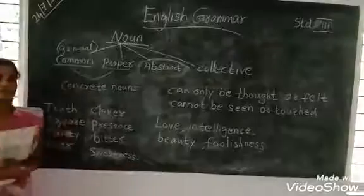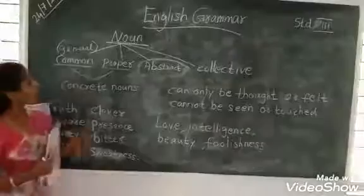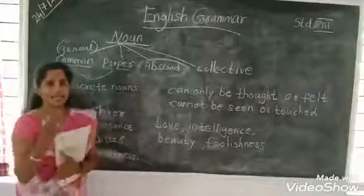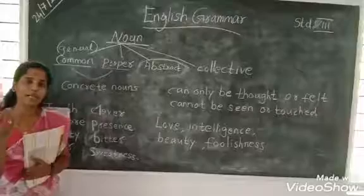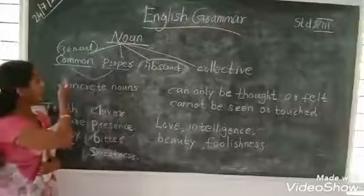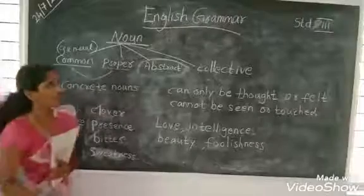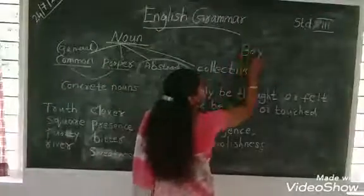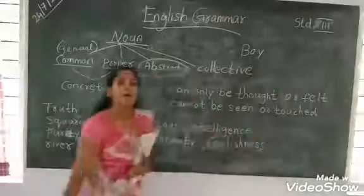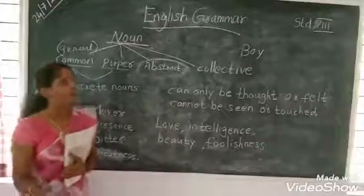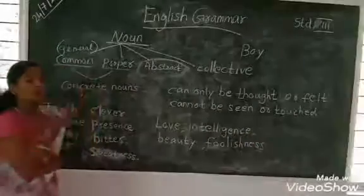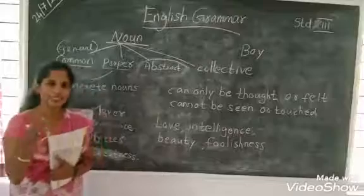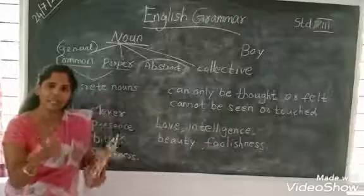What is common noun? Common noun is the general name. General name is the common noun. For example, boy. Boy is a common noun. Then, proper noun. Proper noun means specific name.